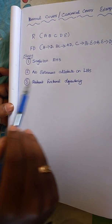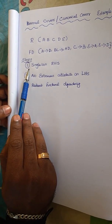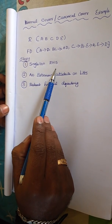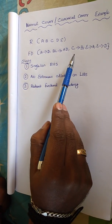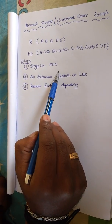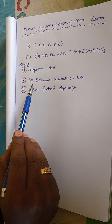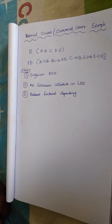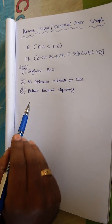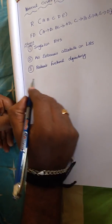In this problem we need to follow three important steps. The first step: we have to make sure the right-hand side has only a singleton value. If it does not, we need to decompose. The second step: there should be no extraneous attribute on the left-hand side. And the third: there should be no redundant functional dependency. So we will see the problem one by one.